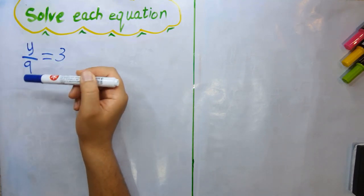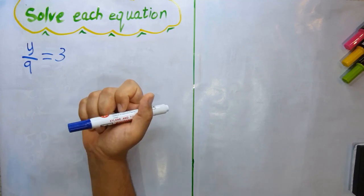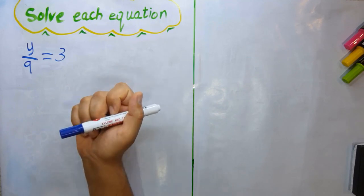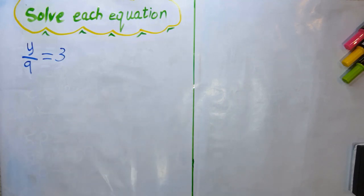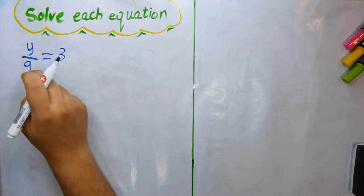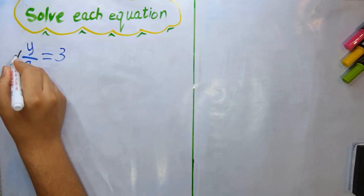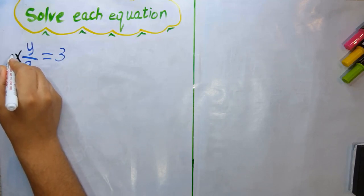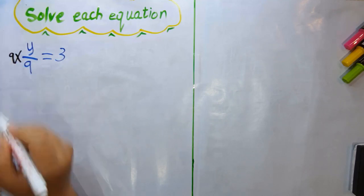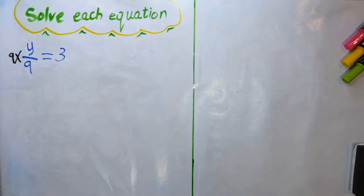What is the operation between y and 9? It is divide. The opposite of divide is multiply. So to remove 'divide by 9', we multiply both sides by 9.